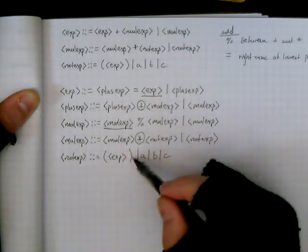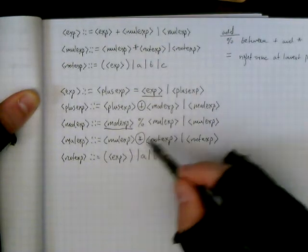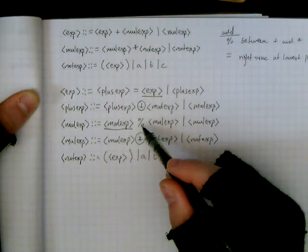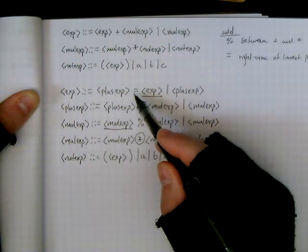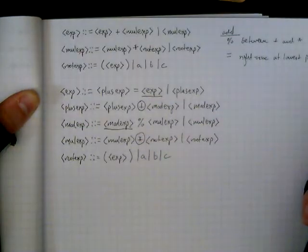And so, if parentheses are the highest level, multiplication is the next level, then mod, then plus, and then the lowest level will be the assignment operator, as we expected.